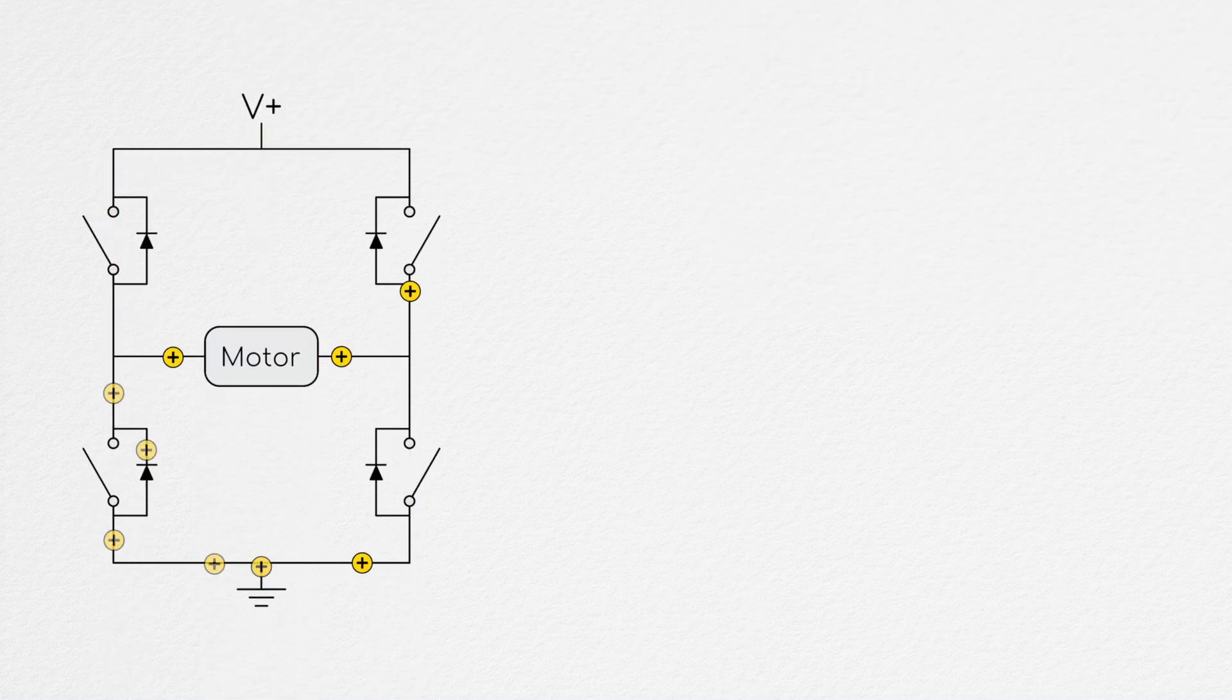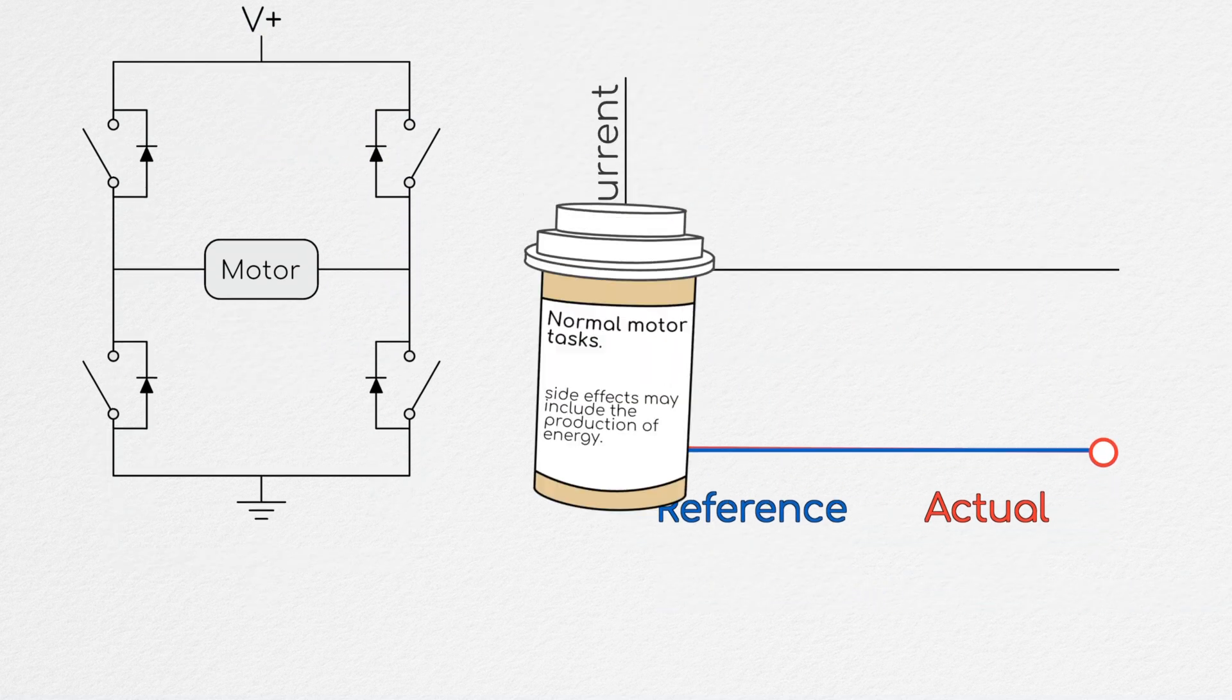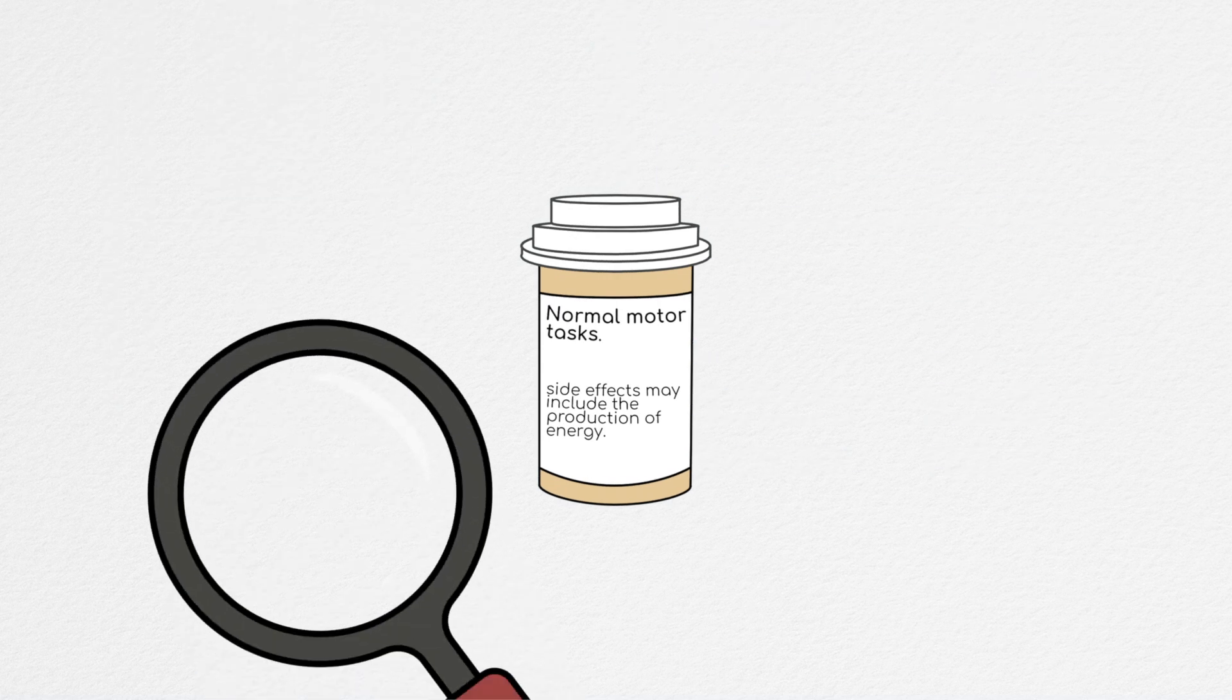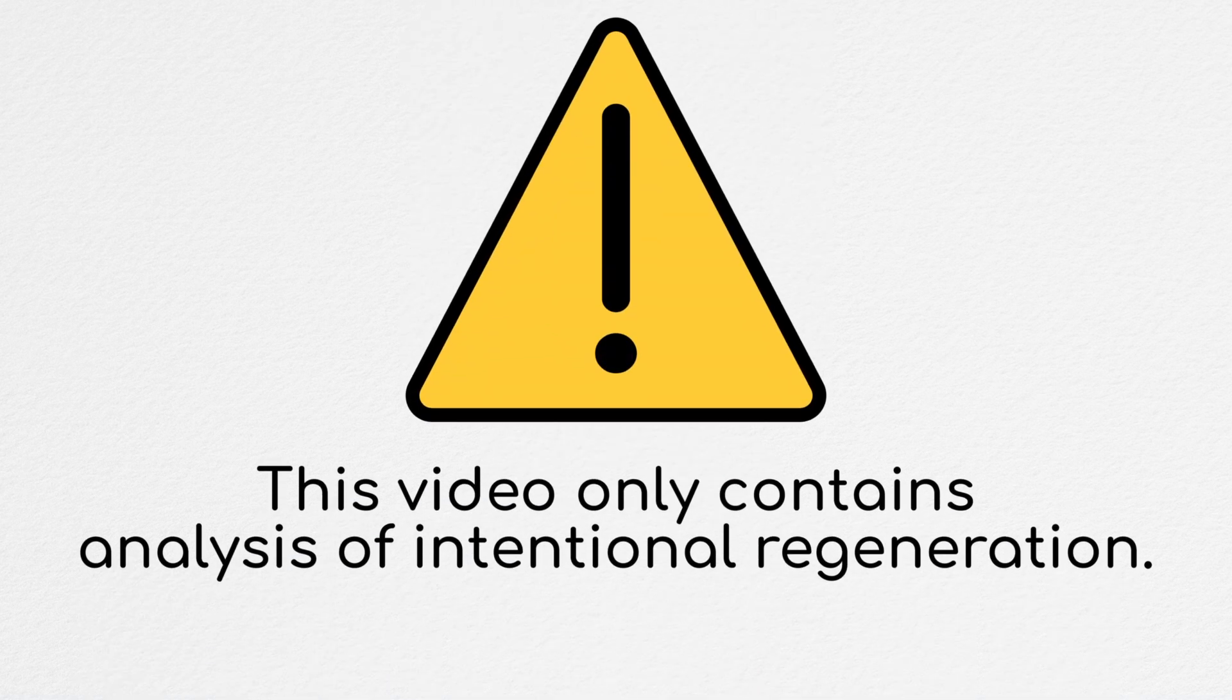However, this would include things such as the unforced phase of hard switching, abrupt changes in current commands, and ultra-high-speed commutation, where the regeneration is not the goal, but rather just a side effect. So for the purposes of this video specifically, we're only going to look at situations where regeneration is the primary goal, not just a secondary result.